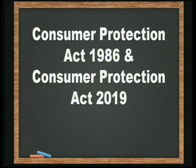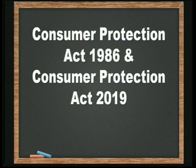Now let us go to the next step — the two laws. After prolonged struggles by various civil society organizations at the local and international level, the government came out with two legislations: the Consumer Protection Act 1986 and the Consumer Protection Act 2019. You may wonder why there are two acts with the same name and what purpose each is serving.